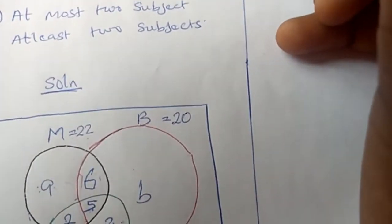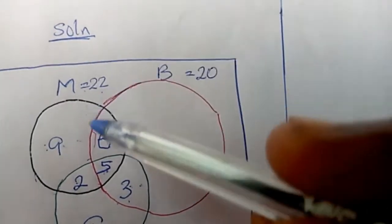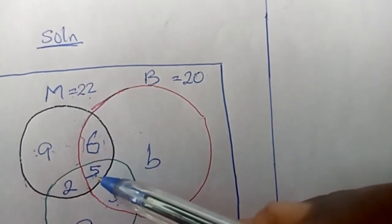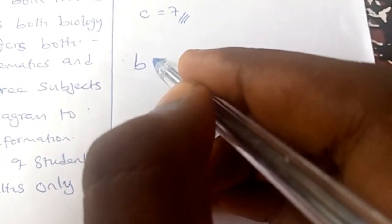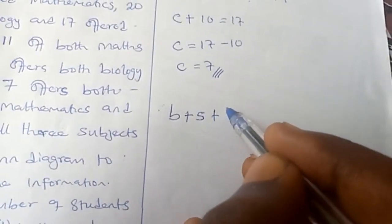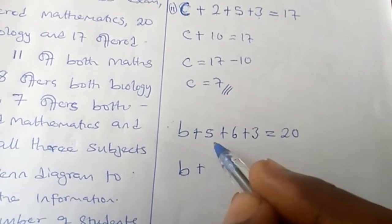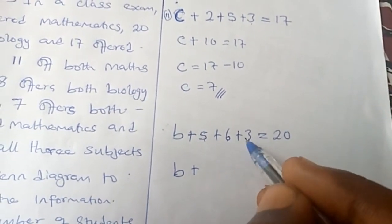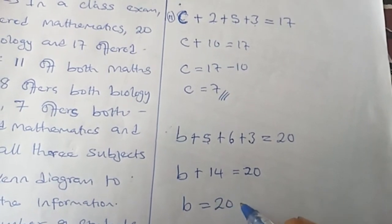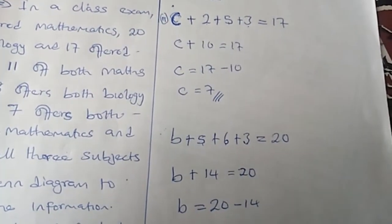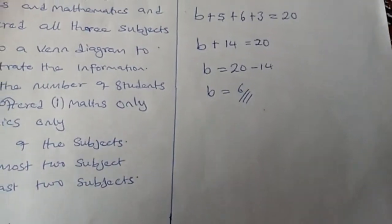They did not ask for biology only, but let's find it anyway. For biology only (region B), we consider the red circle: B plus 6 plus 5 plus 3 equals 20. So B plus 14 equals 20, which gives B equals 6. So biology only is 6.